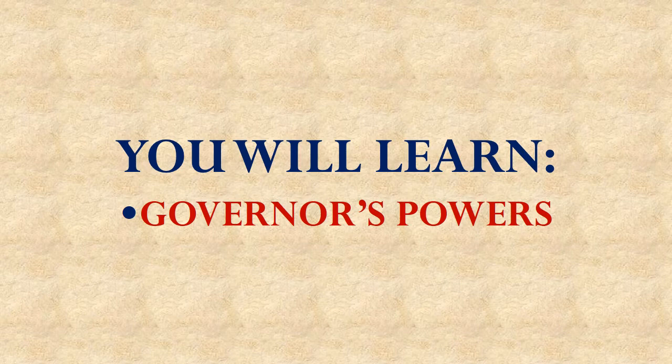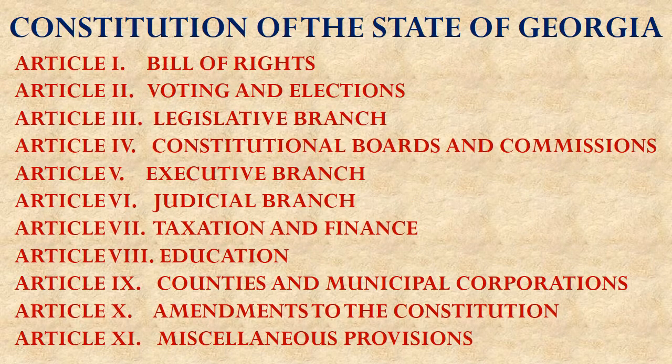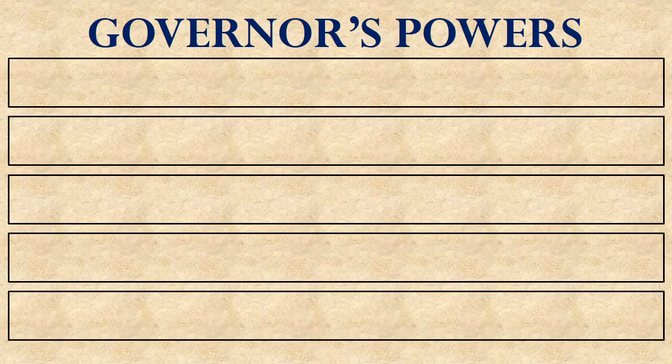I could list them all here on this slide but you'll get to them eventually. This lesson is one of a series of lessons where we are going through the Constitution of the state of Georgia, article by article. This lesson will be drawn from Article 5 about the executive branch. We're going to be talking about ten different powers that the governor of the state of Georgia has. We'll list five of them on this slide and then we'll get another slide to list the other five.